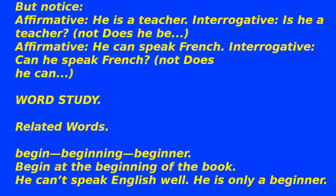But notice: Affirmative: he is a teacher. Interrogative: Is he a teacher? — not 'does he be?' Affirmative: he can speak French. Interrogative: Can he speak French? — not 'does he can?' The verb 'to be' and modal verbs like 'can' form questions differently, without using 'do'.